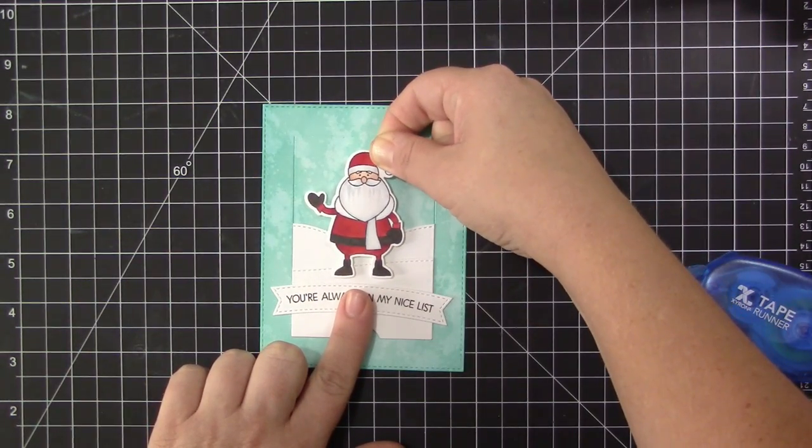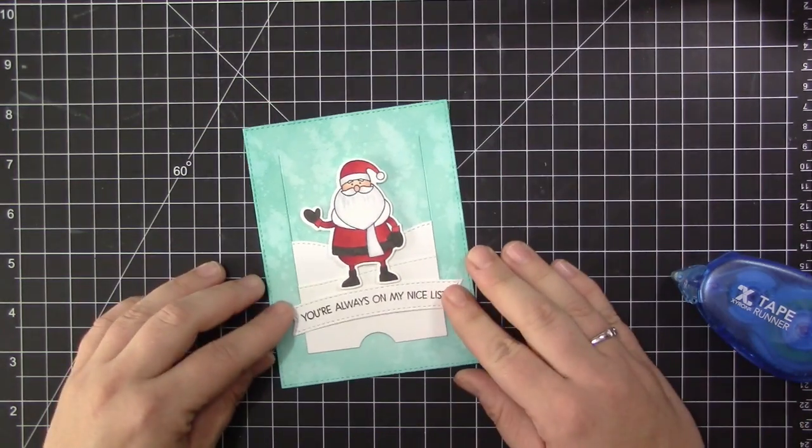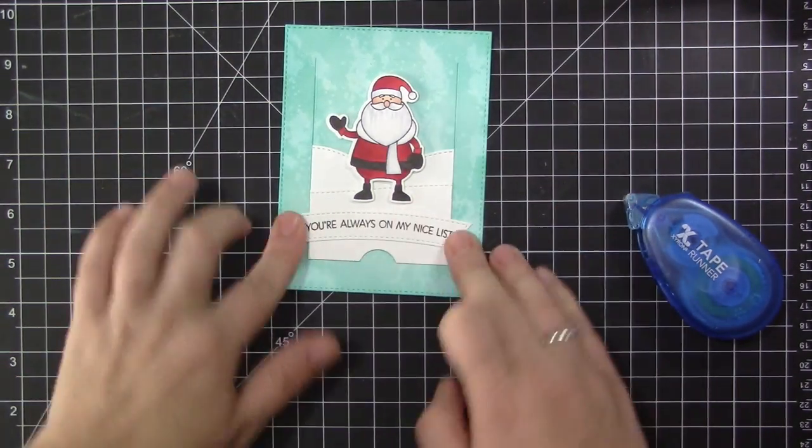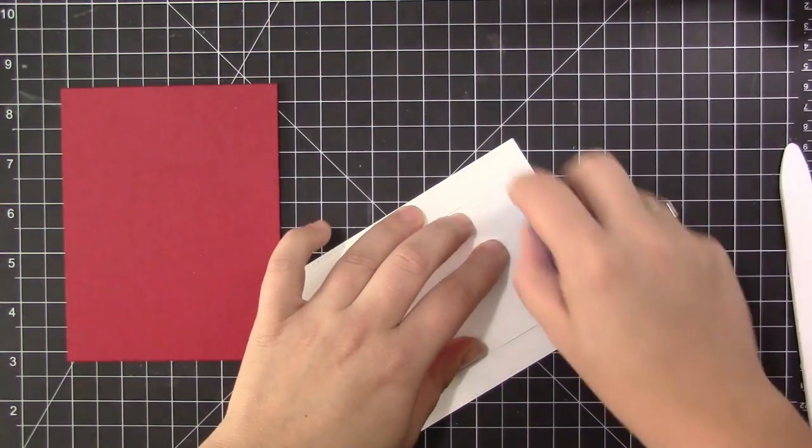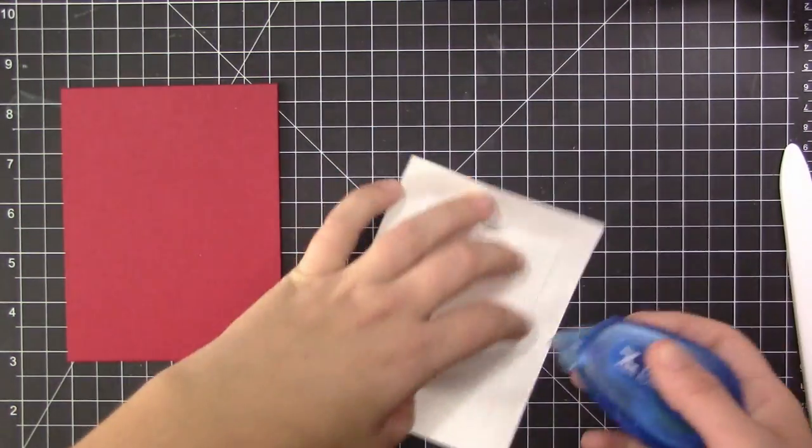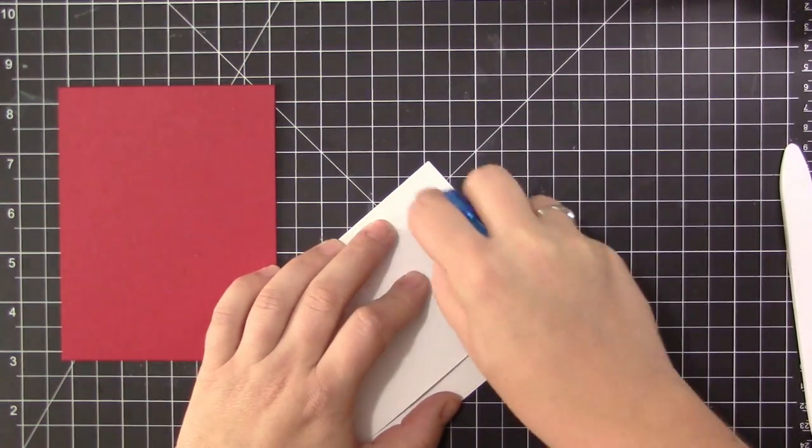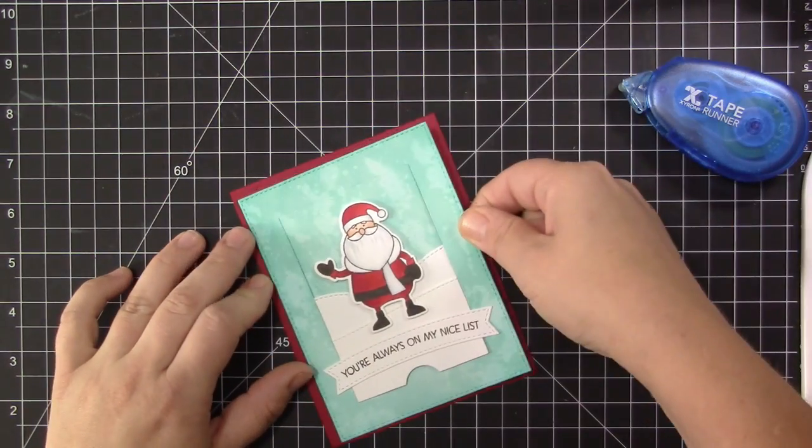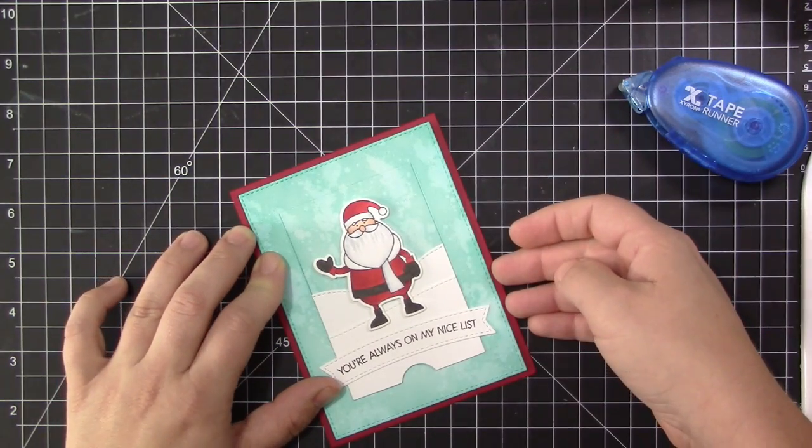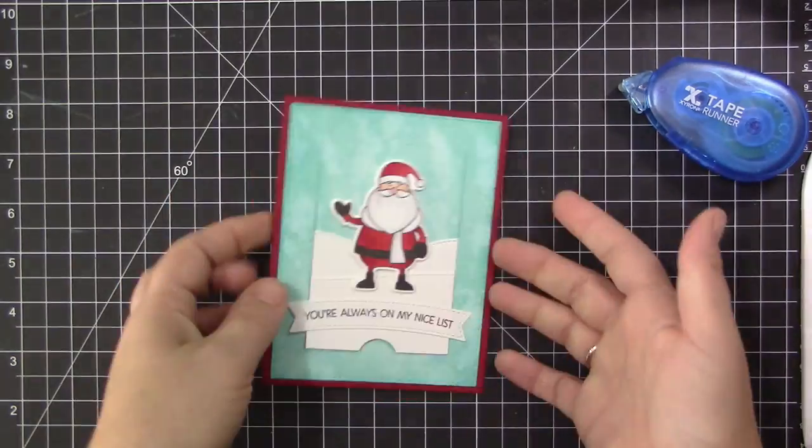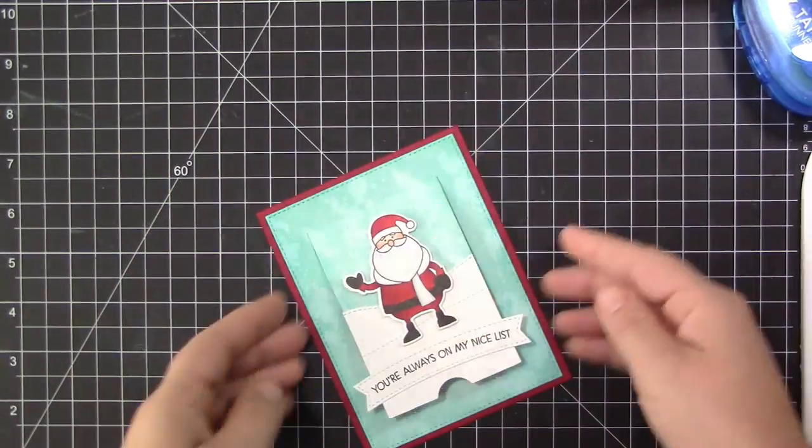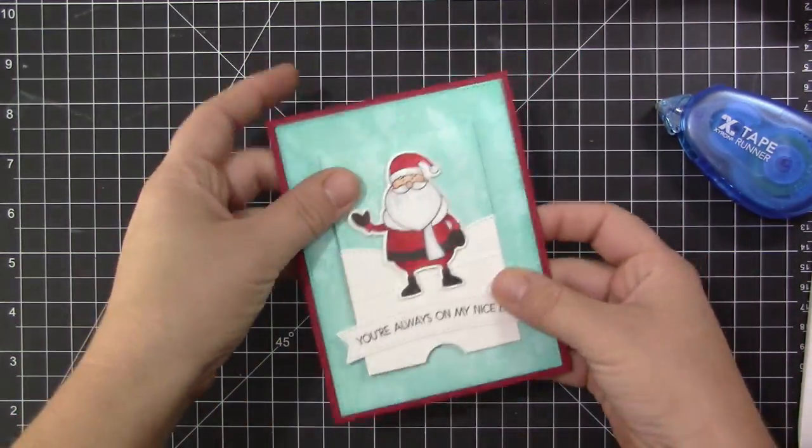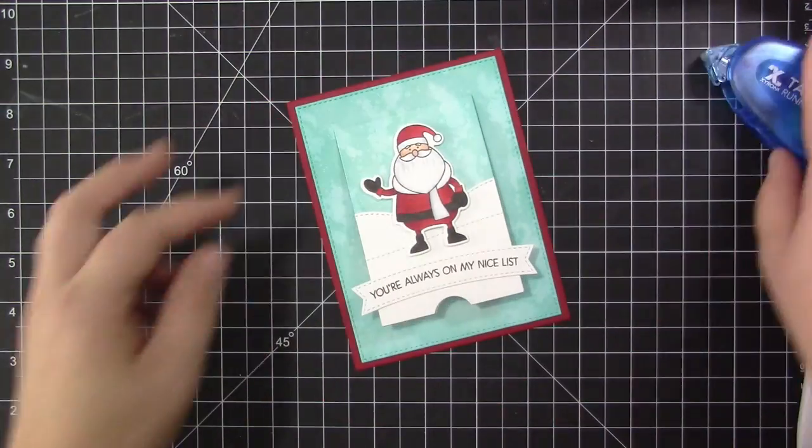Now that I have all the pieces stamped and cut, I'm going to assemble the card. I adhered the snow pieces directly onto the flap with adhesive. I added Santa on with foam adhesive to give him dimension, and then I added the stamped banner with regular tape runner. Now I'm adding adhesive to the outside area of the panel. Make sure you only add it to the outside area so that the middle part will open and close. Use an adhesive that's pretty strong because you want that outside area to stay stuck down. When you lift the flap, there's a perfect opening inside to hold a gift card. I just add adhesive right into the center area and stick the gift card on top.